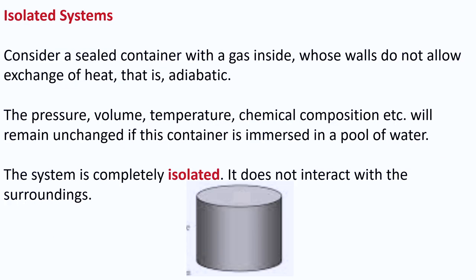We now talk about different types of systems. An isolated system is one that does not allow exchange of anything — it is like a sealed container whose walls do not allow exchange of heat; this is called an adiabatic system. The pressure, volume, temperature, and chemical composition remain unchanged even if you immerse this container in a pool of water — nothing changes inside, as it is purely isolated and does not interact with its surroundings.